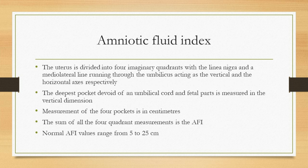The second method is the amniotic fluid index. The uterus is divided into four imaginary quadrants with the linea alba and a mediolateral line running through the umbilicus acting as the vertical and horizontal axis respectively. The deepest pocket devoid of an umbilical cord and fetal parts is measured in the vertical dimension. Measurements of the four pockets are in centimeters, and the sum of all four quadrant measurements is the AFI. Normal AFI values range from 5 to 25 centimeters.